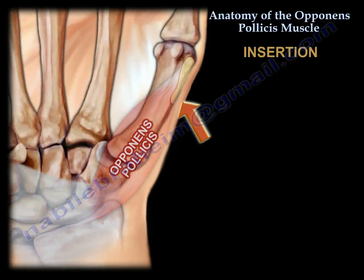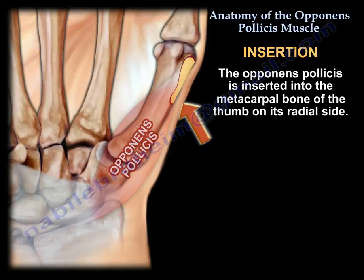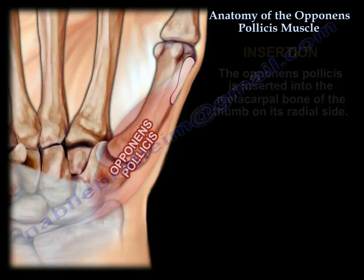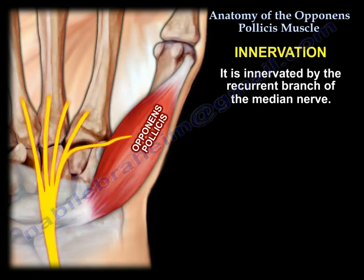Insertion: it inserts into the metacarpal bone of the thumb on its radial side. Innervation is by the recurrent branch of the median nerve.